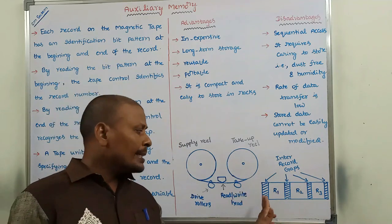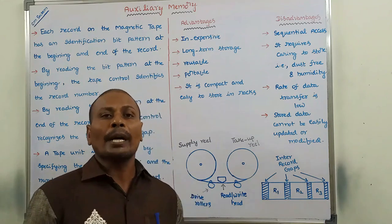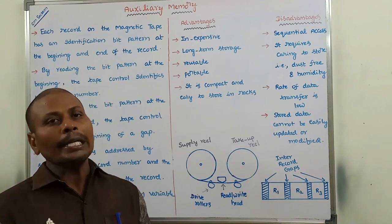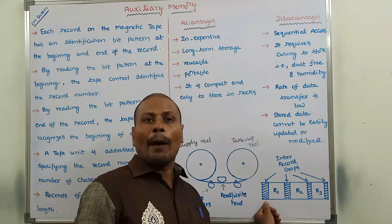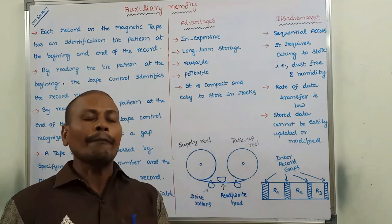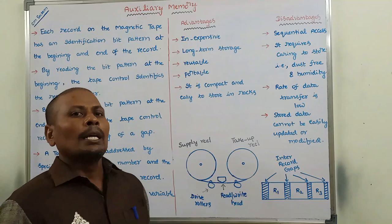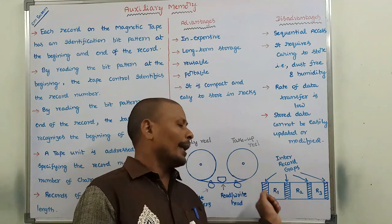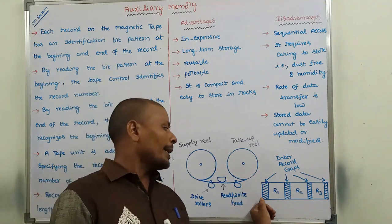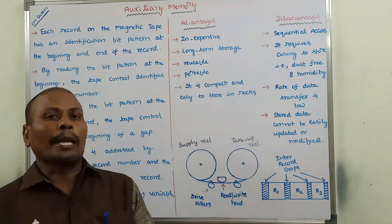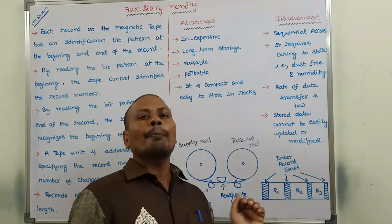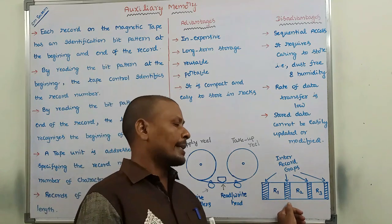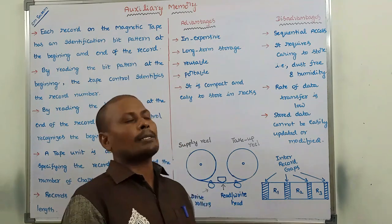By reading the bit pattern at the end of the record, the tape control identifies it as a gap before the next record. By reading the bit pattern before the beginning of a record, the tape control identifies the record number.